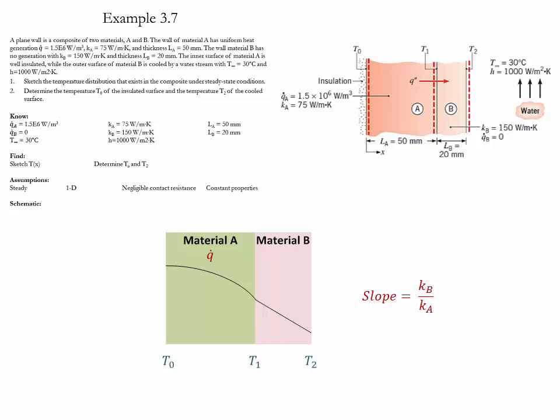The first step of the problem is to sketch the temperature distribution that exists in the composite wall under steady conditions. Since material A has a heat generation, the profile of the temperature is going to be parabolic. Since material B has no heat generation, the thermal distribution is going to be linear. Keep in mind that the slope between the interface of material A and material B has to be exactly the same to avoid discontinuity. The value of this slope for this case is going to be a ratio between the thermal conductivity of material B and the thermal conductivity of material A.